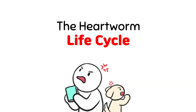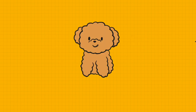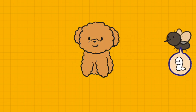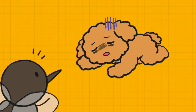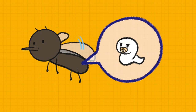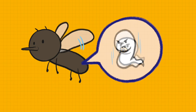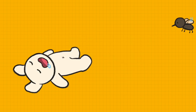The Heartworm Life Cycle. Heartworms causing disease in dogs are parasites transmitted by mosquitoes. If a mosquito bites an infected dog, it can spread heartworm larvae to other dogs the next time the mosquito bites.